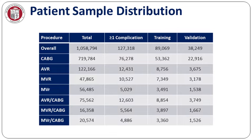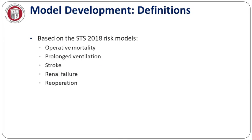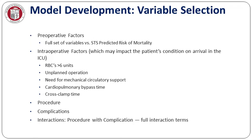There was a wide distribution of patients and complications across both training and validation models for each operation, enabling us to integrate operation into the risk model. Definitions were the same as for all of the previous STS risk models. However, variable selection was unique in that failure to rescue is essentially a metric of postoperative care. Therefore, this enabled us to incorporate not only preoperative but select intraoperative variables as well. For computational efficiency, we used the STS predicted risk of mortality as a summary score, rather than all the individual variables in our usual mortality risk models, after demonstrating virtual equivalence of model discrimination with each approach.